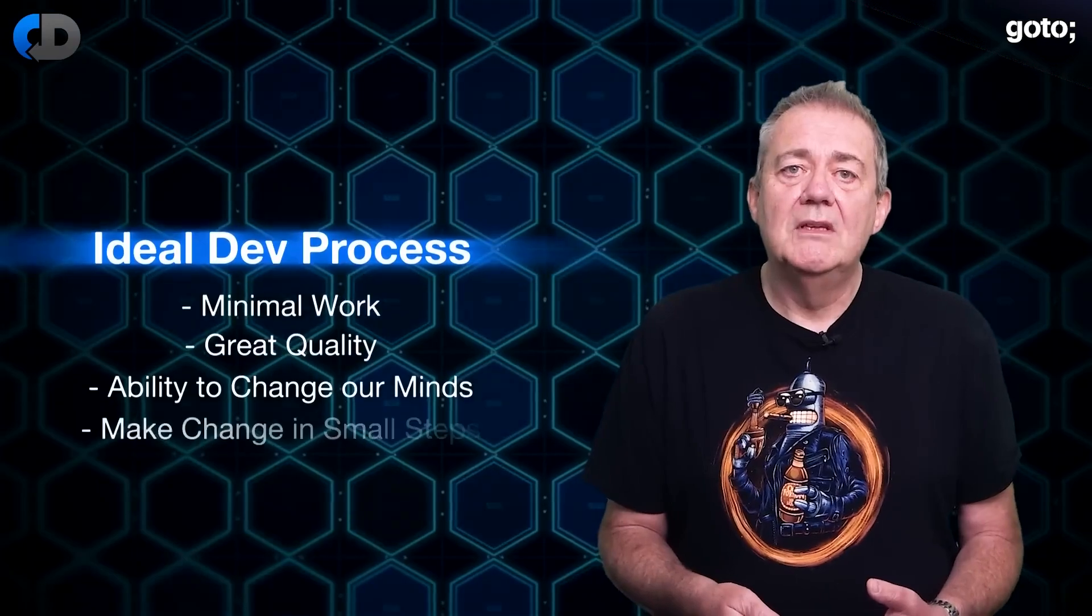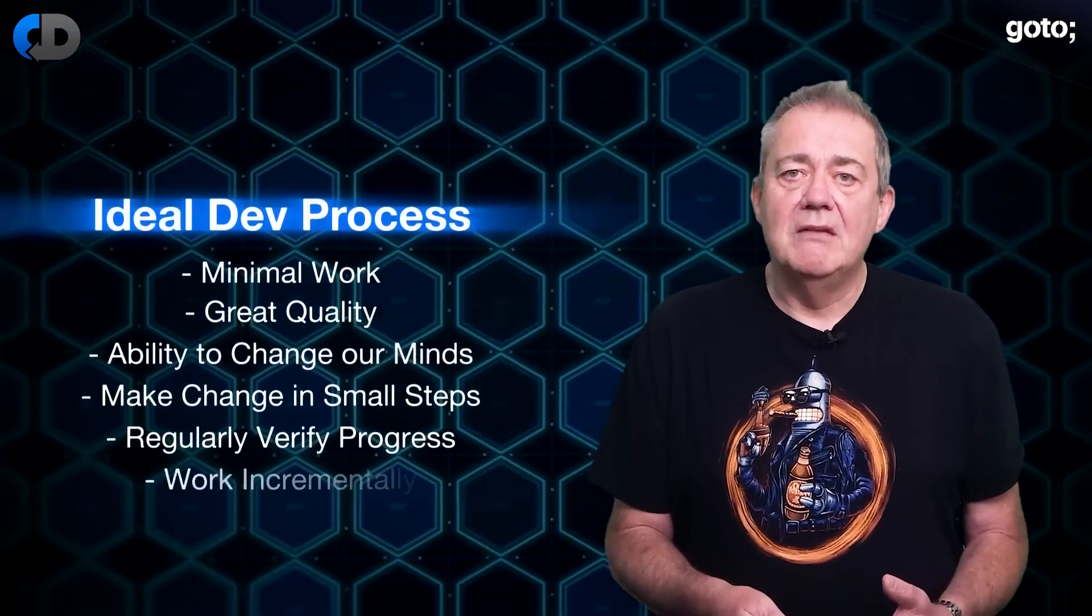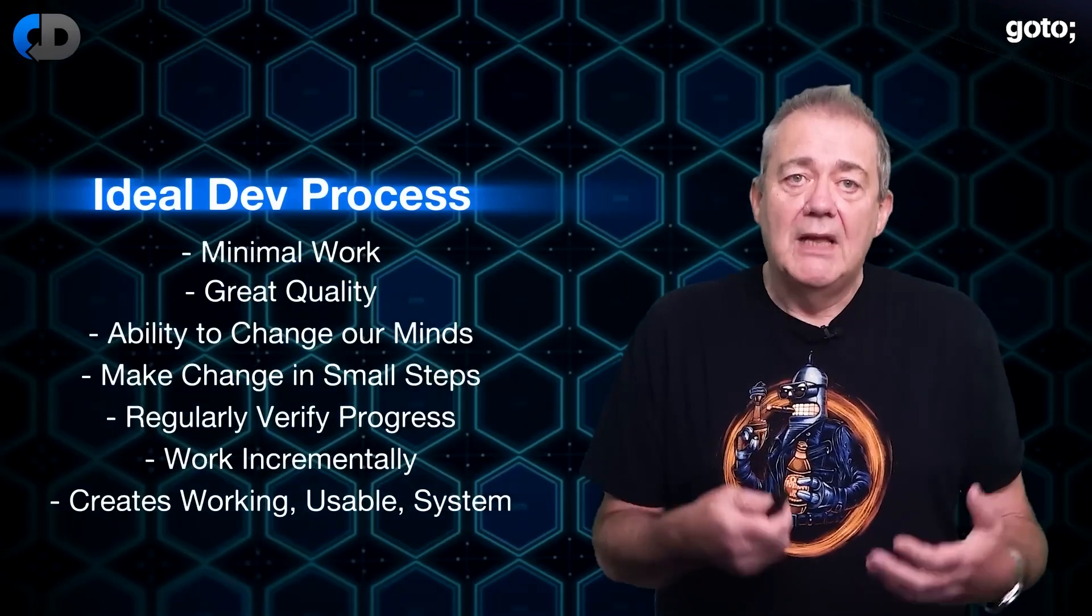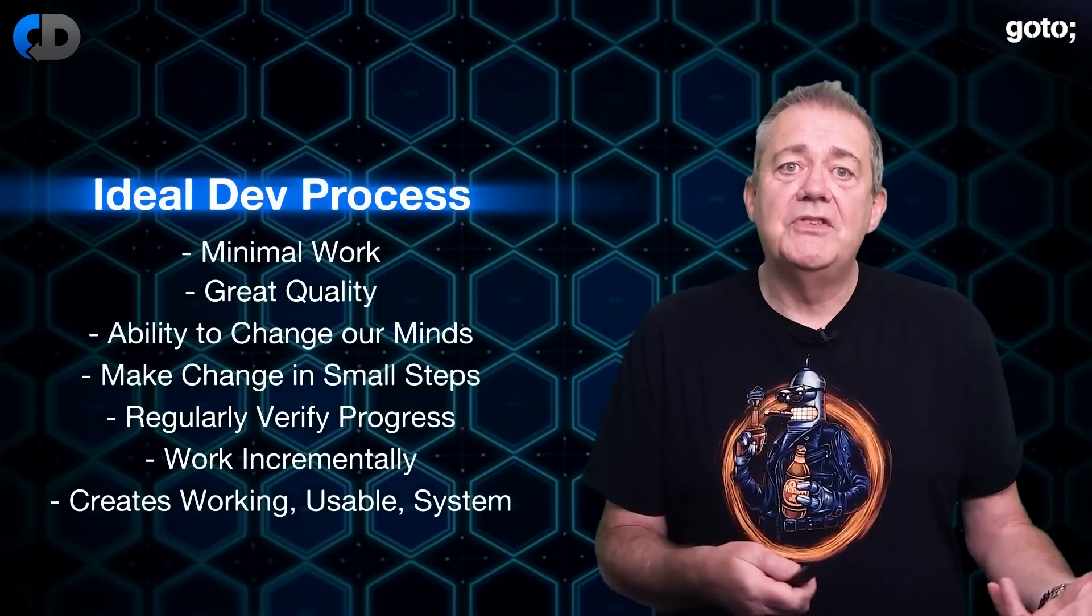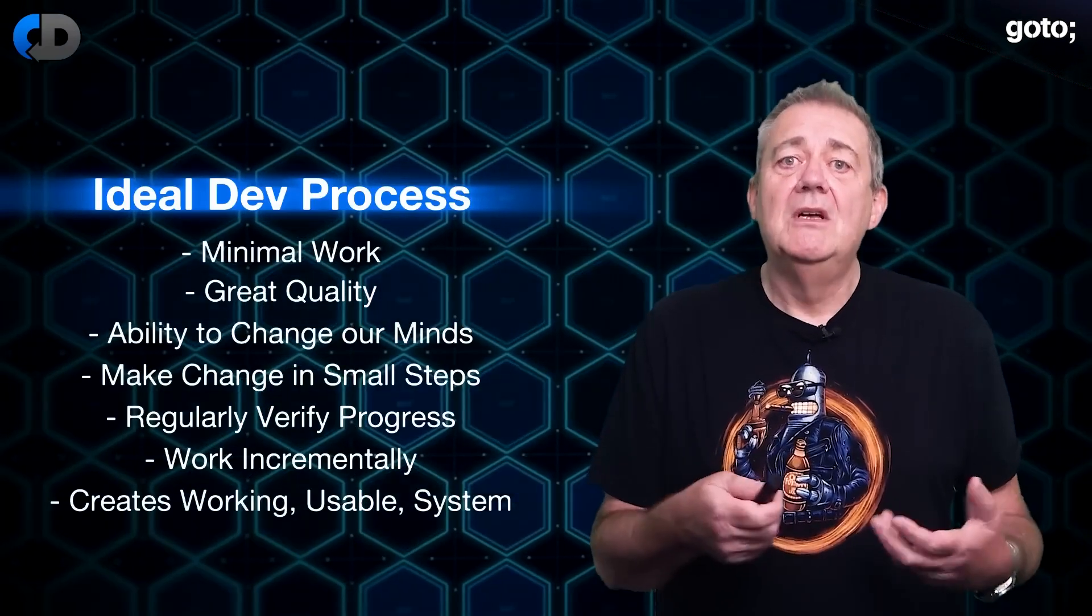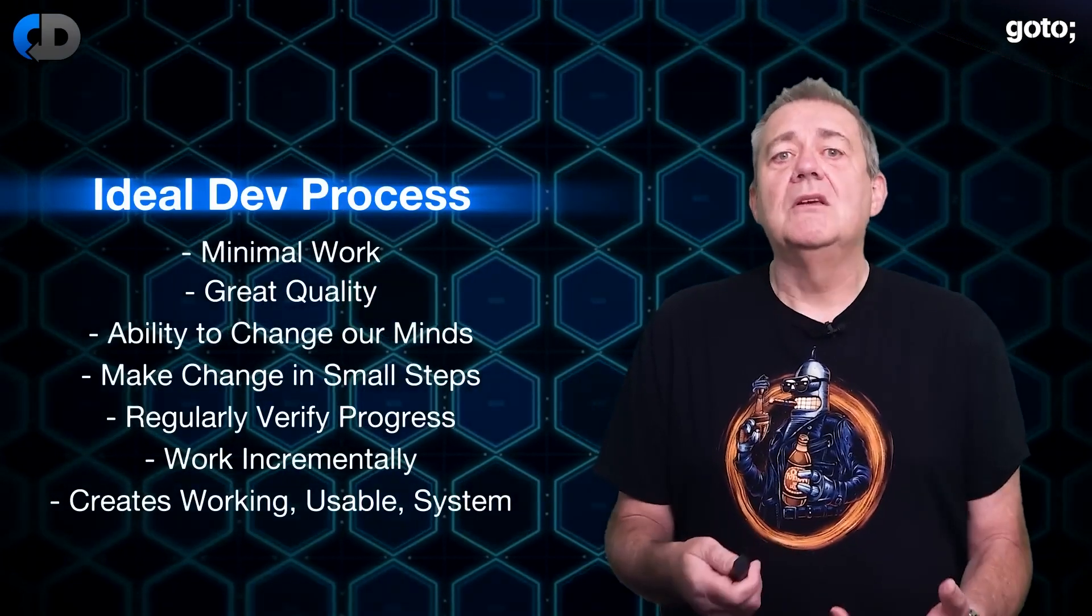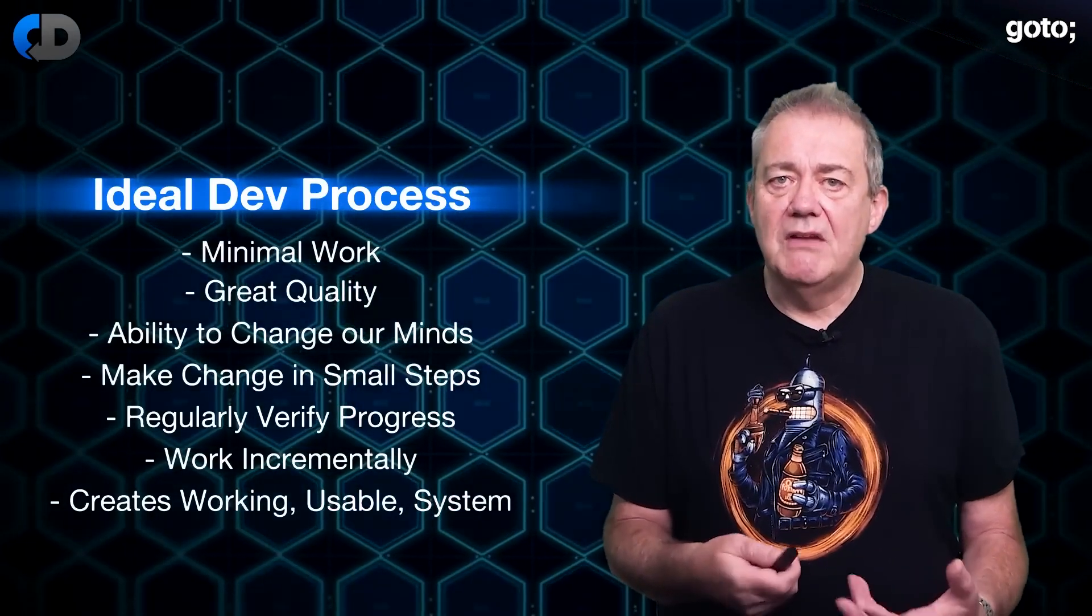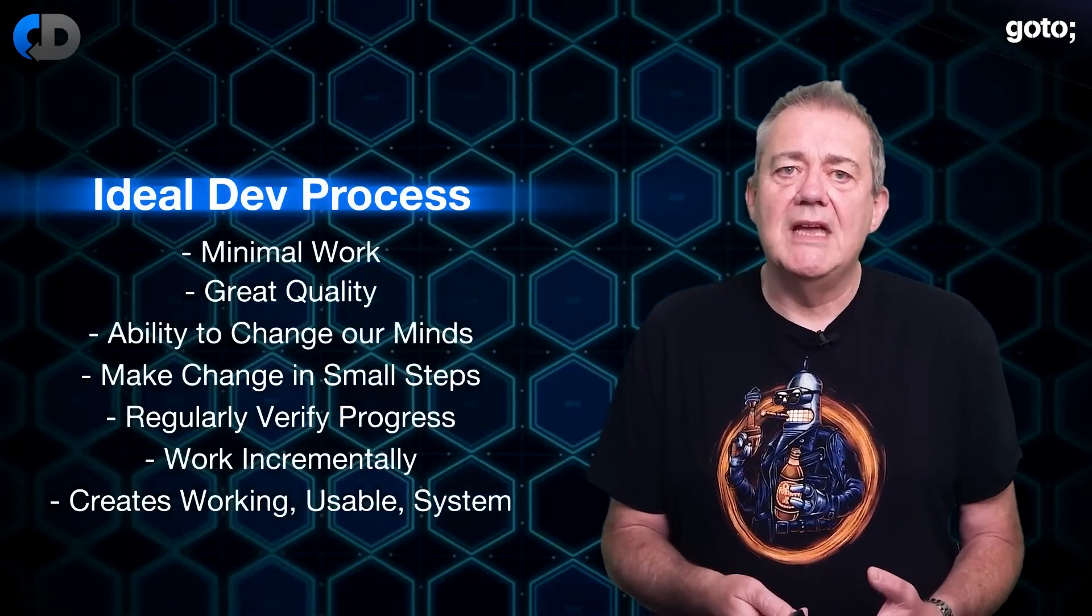So although I said earlier that we only need to capture requirements write code and test things in our ideal approach we do need to do that to the point of having a working usable system. Maybe you think that this is cheating but I'm going to count getting my software up and running deployable as coding and I want to be able to confirm that with tests too. So even in our perfect ideal approach coding means everything necessary to get our system into a working usable state.